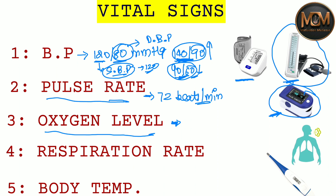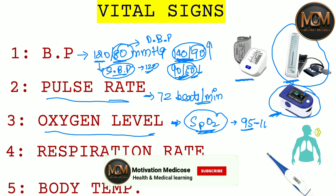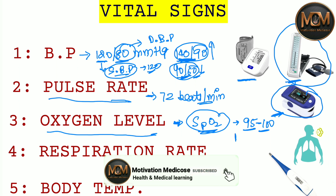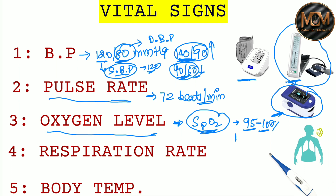The oxygen level is measured as the saturation of oxygen in our blood. The normal value should be 95 to 100 percent. If the oxygen saturation is below 90, that is a kind of alert and you need to go to the doctor.